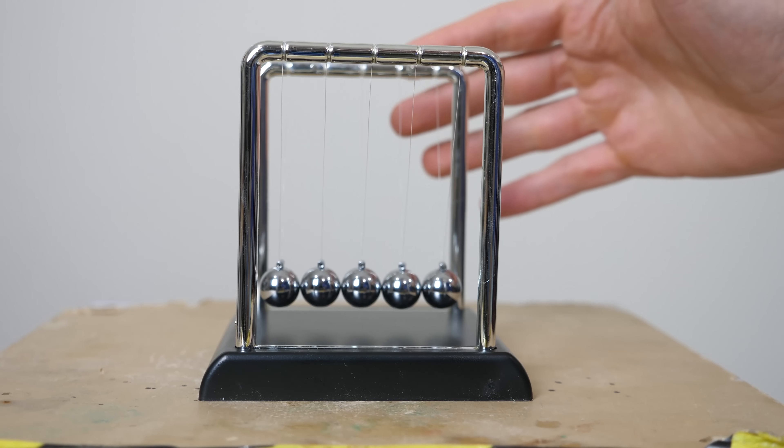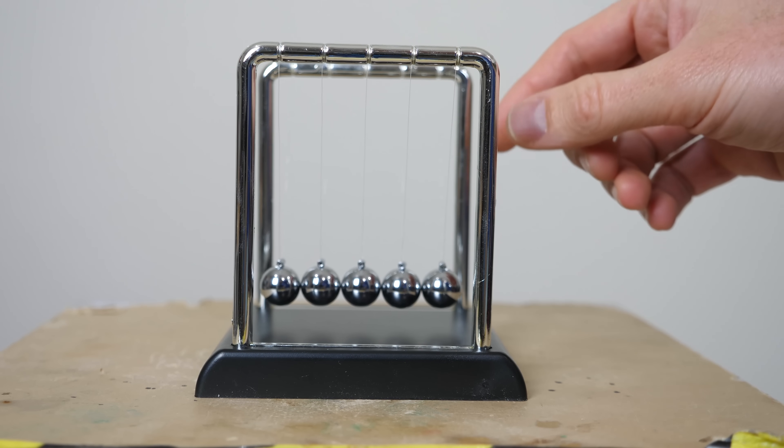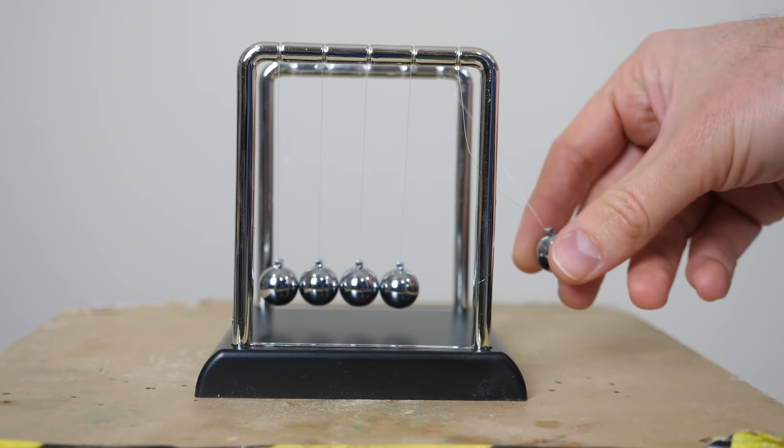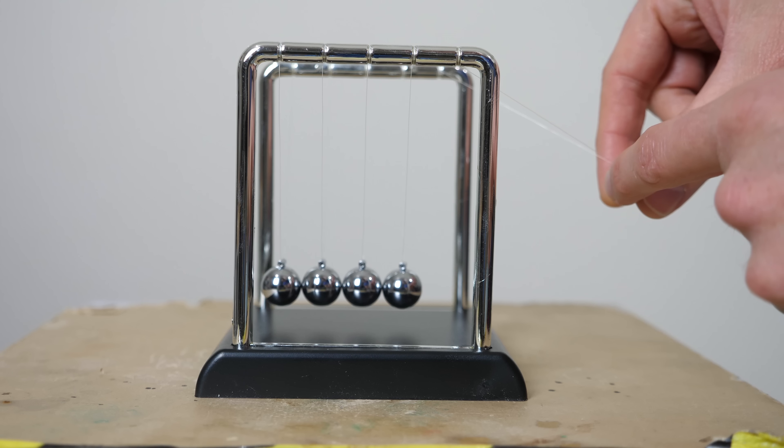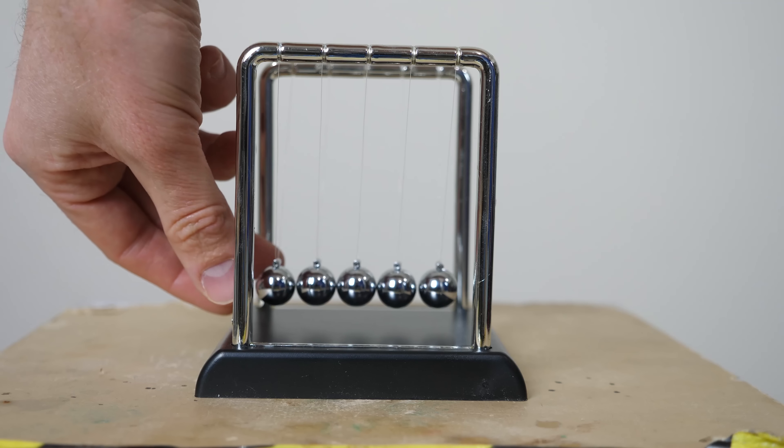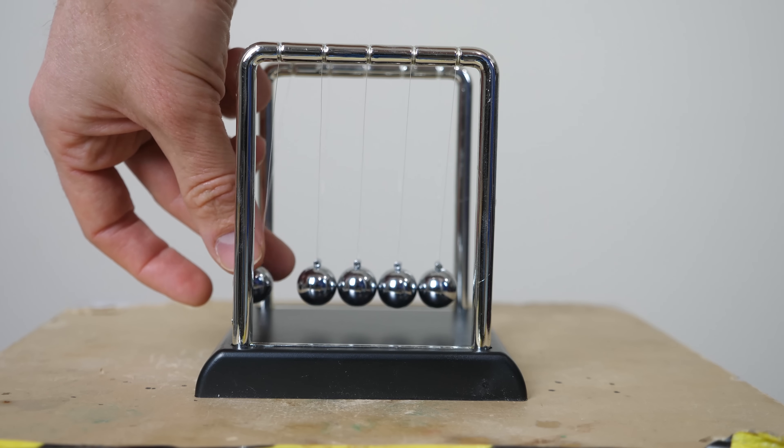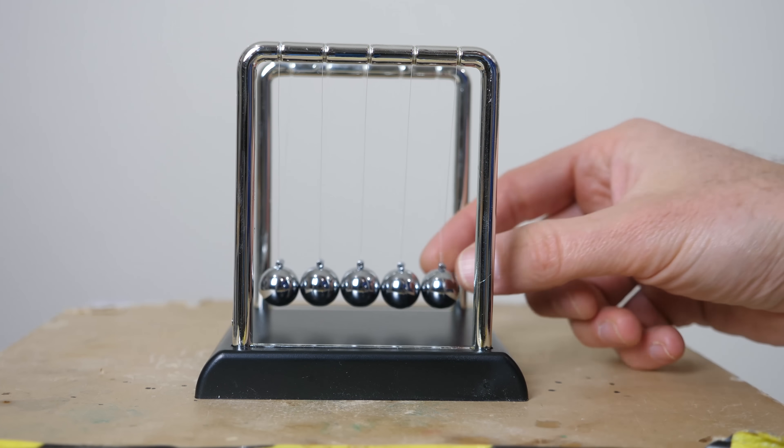But here's the really interesting thing about Newton's Cradle. You probably always had Newton's Cradle explained to you that the reason how it works is through conservation of momentum. So when you lift one ball up and let it go, momentum is conserved so that when one incoming ball is going at a certain speed and it stops, then an outgoing ball has to continue in this direction in order to conserve momentum. But this actually does not explain how a Newton's Cradle works at all.